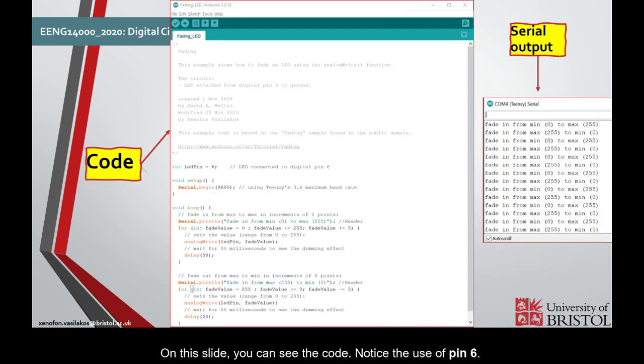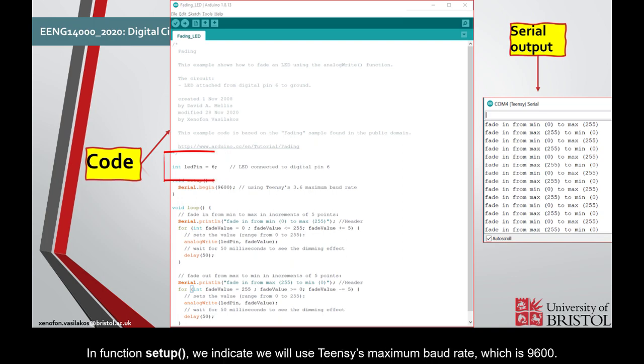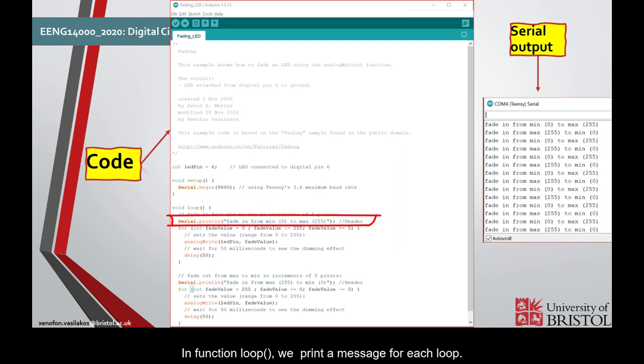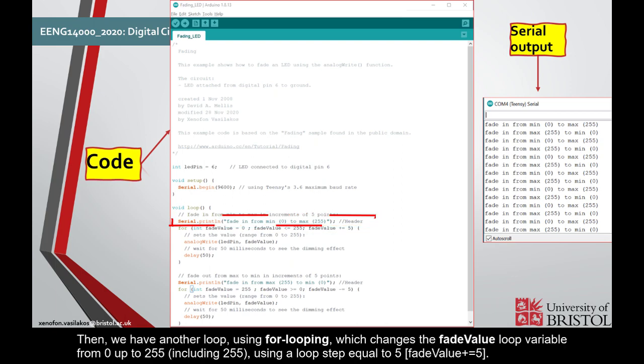On this slide, you can see the code. Notice the use of pin 6. This is set by int variable led pin. In function setup, we indicate we will use Teensy's maximum baud rate, which is 9600. In function loop, we print a message for each loop.